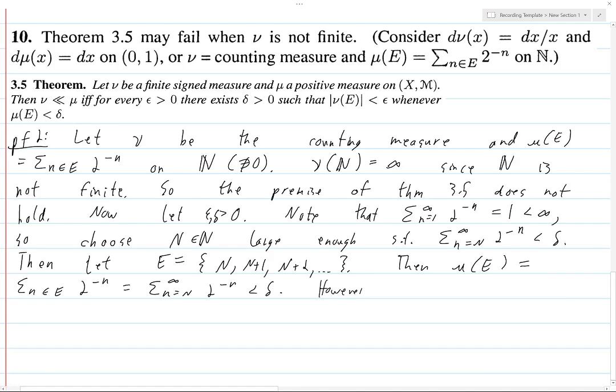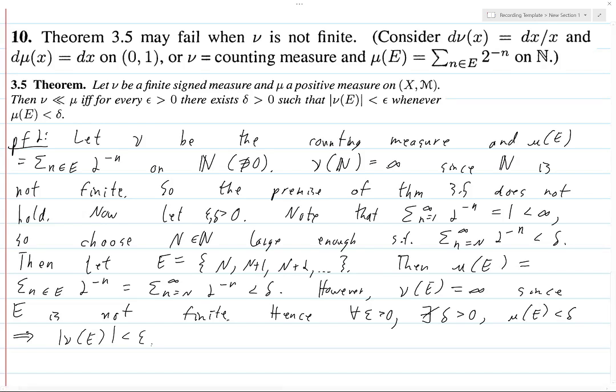However, ν(E) is equal to infinity, since E is not finite. Hence, for all epsilon greater than 0, there does not exist delta greater than 0 such that μ(E) less than delta implies ν(E) less than epsilon. So, we've proven the exercise in two different scenarios.